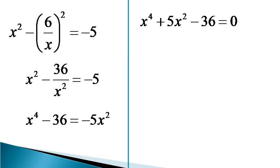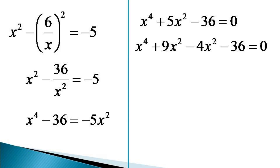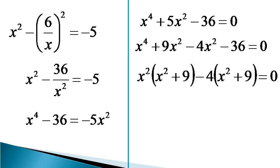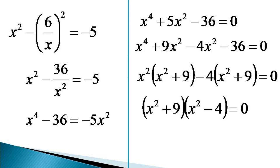This can be factorized as x to the power 4 plus 9x squared minus 4x squared minus 36 is equal to 0. Taking x squared common from the first two terms and minus 4 from the last two terms, the expression becomes x squared times (x squared plus 9) minus 4 times (x squared plus 9) is equal to 0. Taking x squared plus 9 as common, we get (x squared plus 9)(x squared minus 4) is equal to 0.